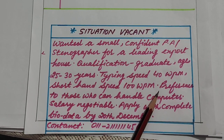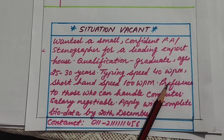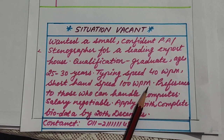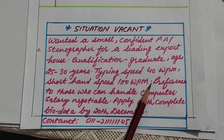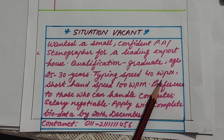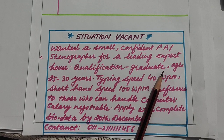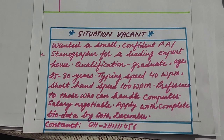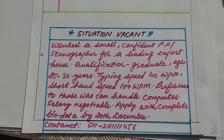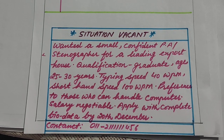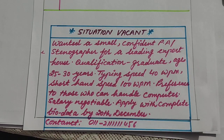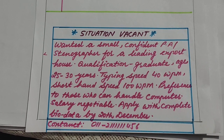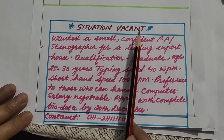Now I will tell you what things you have to keep in mind when writing a situation vacant advertisement. Specify the post and number of vacancies, qualities of the person required, name of the company (that is optional), age and sex of the candidate, salary and perks, mode of applying, contact address and phone number.